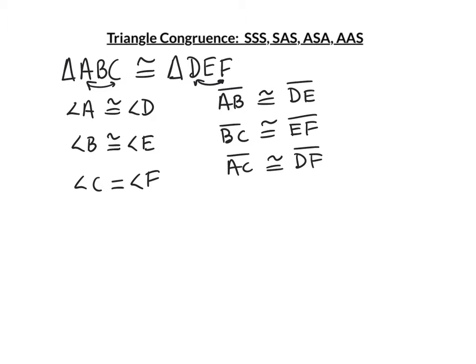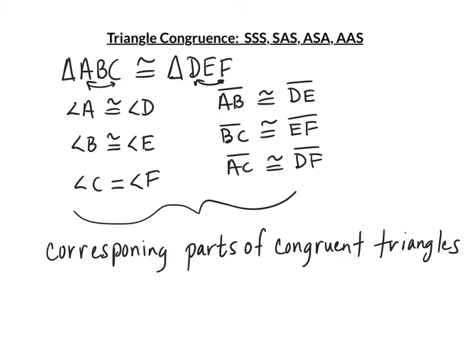When you know that triangles are congruent, you can state any of these things because they are corresponding parts of congruent triangles. We often abbreviate this CPCTC — corresponding parts of congruent triangles are congruent.